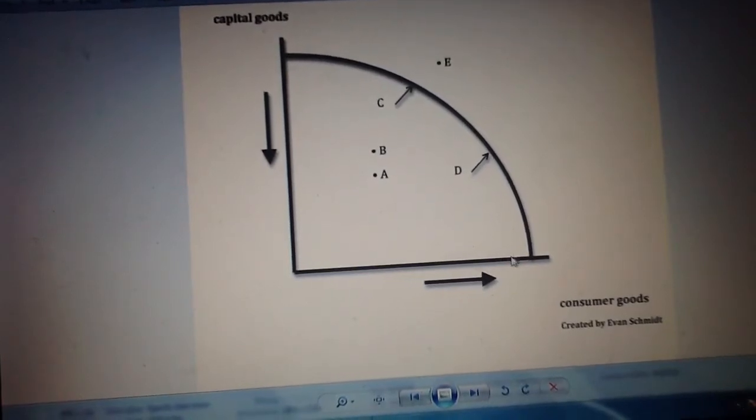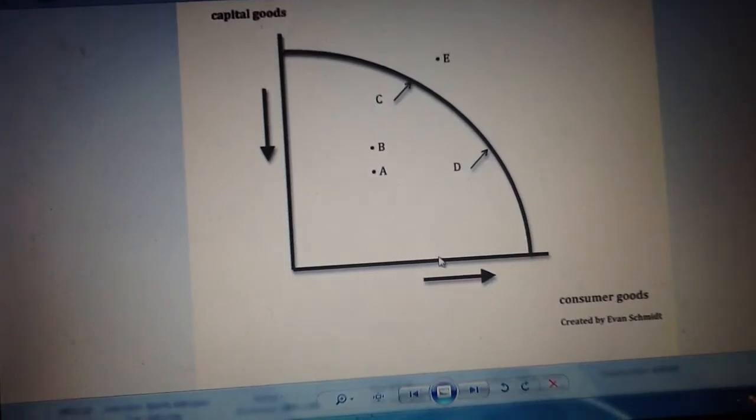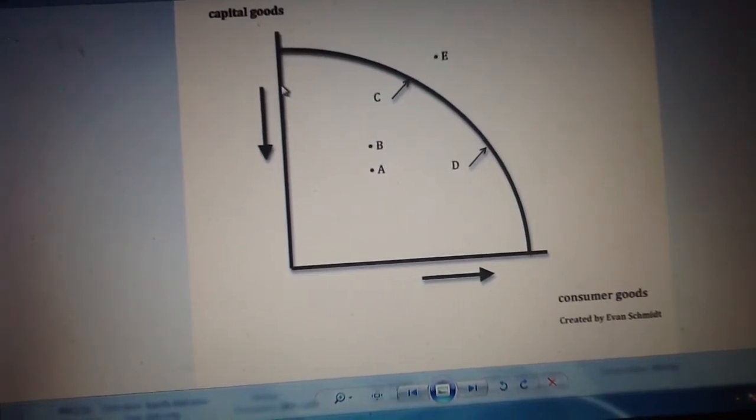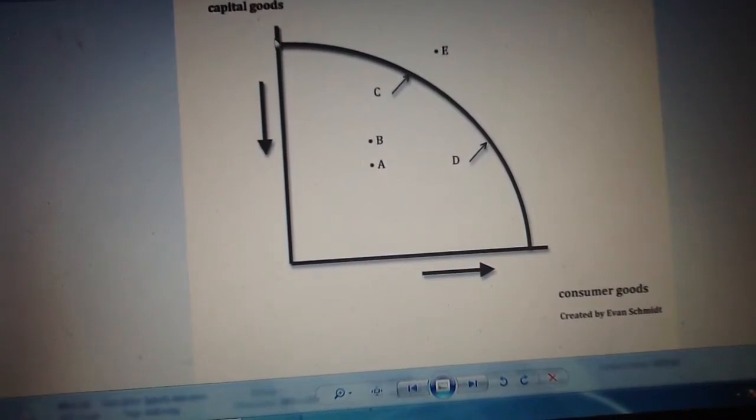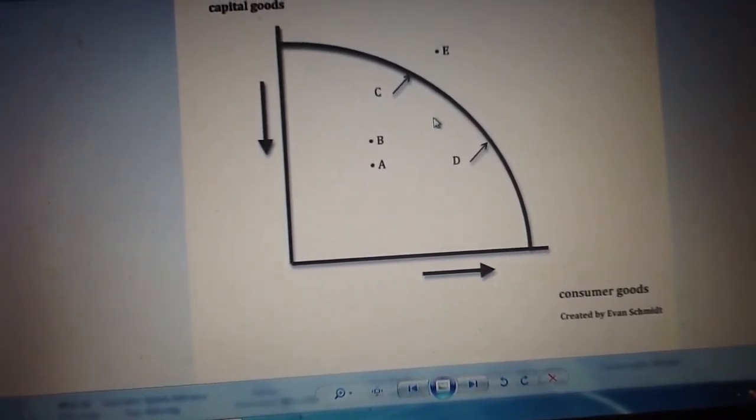For example, if you produce, say that's five here, you can produce five consumer goods. And let's call that number sixteen there—you can produce sixteen capital goods. So that's basically what it is in a nutshell: it compares two different products that you can output in an economy.